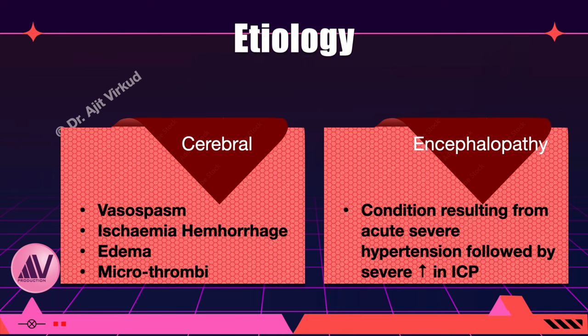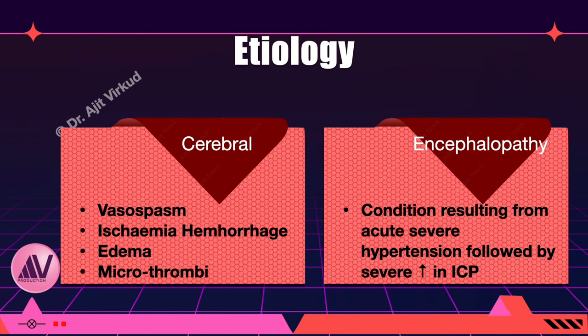The exact cause of these seizures is unknown. There are many theories, such as cerebral vessel vasospasm, ischemia, intracerebral hemorrhage, cerebral edema, or formation of microthrombi in cerebral blood vessels. Hypertensive encephalopathy is defined as an acute condition resulting from acute and severe hypertension followed by a severe increase in intracranial pressure.